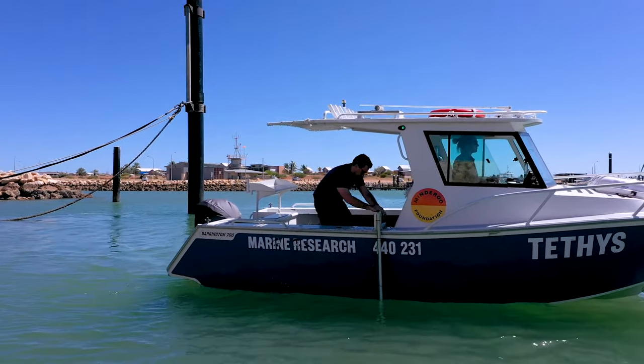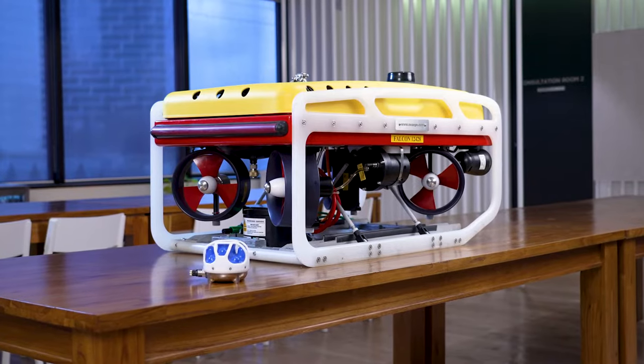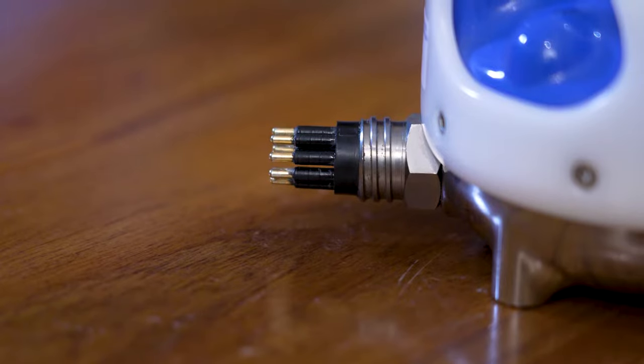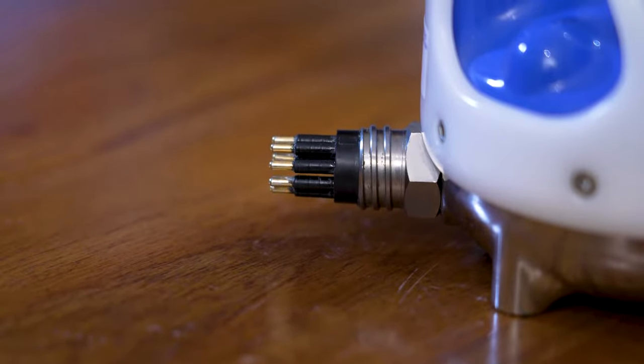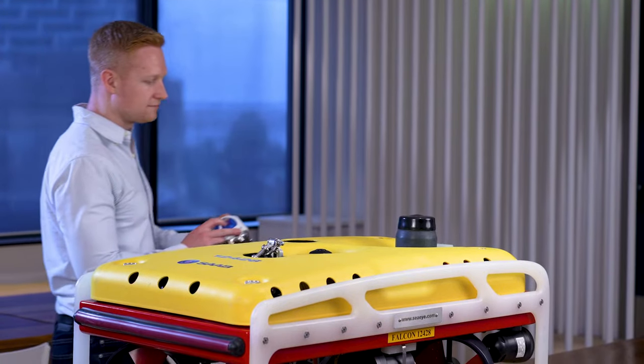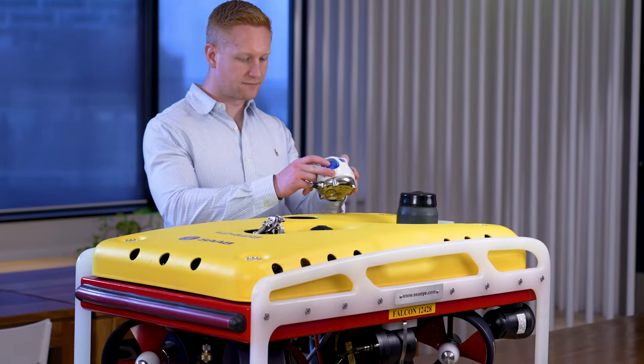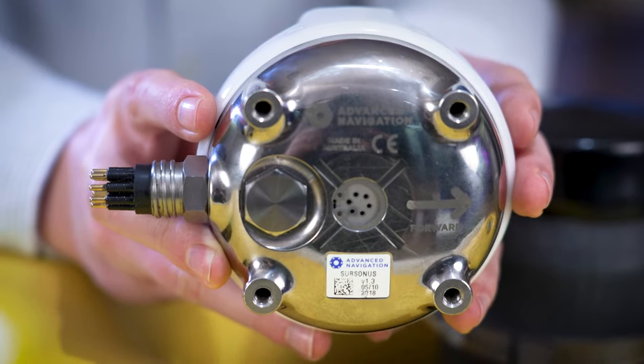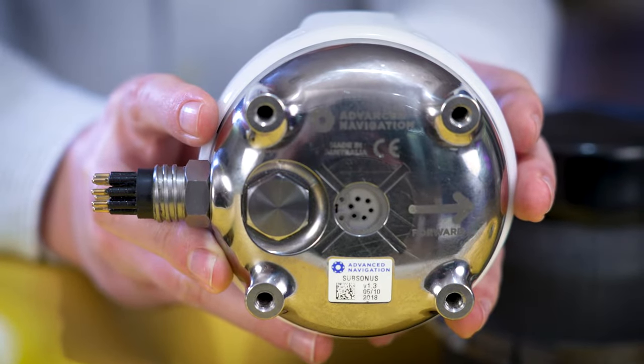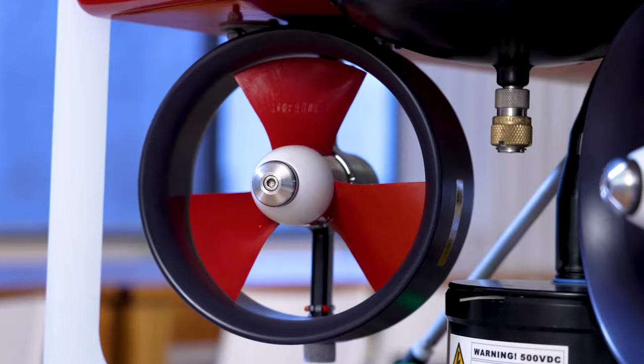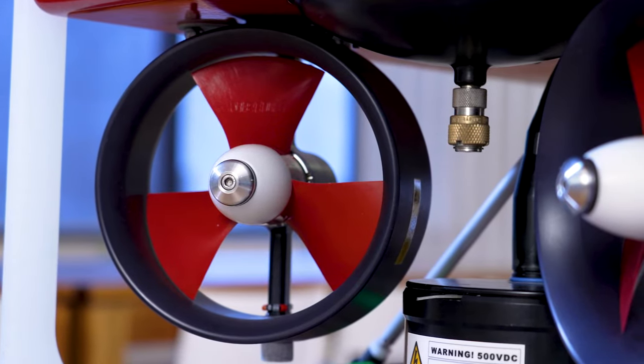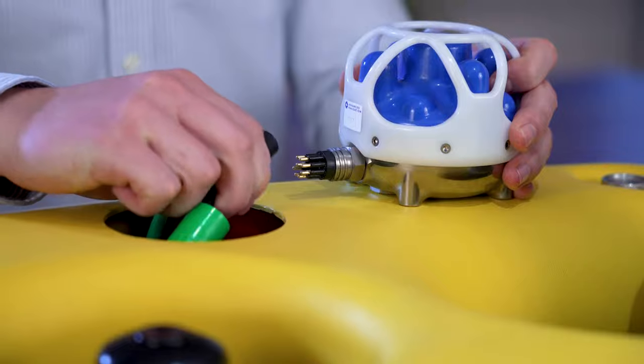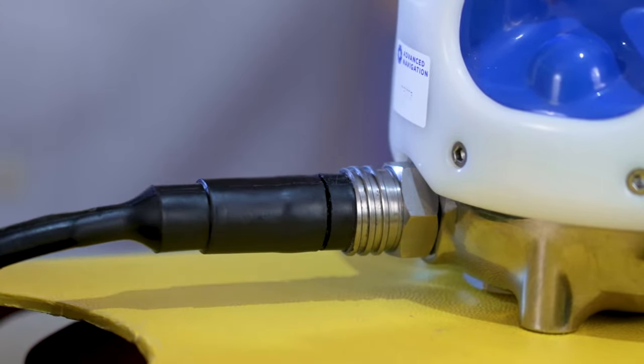To install Subsonus on an ROV or other subsea vehicle, it is recommended to use a Subsonus unit with a horizontal connector. Mount the Subsonus transducer to the top of the vehicle for best acoustic performance with the forward arrow aligned with the forward direction of the vehicle. Ensure the unit is well clear of thrusters or sources of noise. A connecting cable such as a whip can be used to provide power and data via Ethernet through the subsea vehicle system.